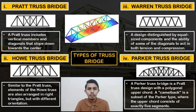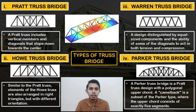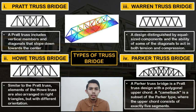There are several types of truss bridge. First, Pratt truss bridge, which has vertical and diagonal members arranged in the middle. Second, Howe truss bridge, similar to Pratt truss, where the elements are also arranged in rectangles but with a different orientation. Third, Warren truss bridge, characterized by equal-sized components and the ability of some members to act in both tension and compression. Lastly, Parker truss bridge, which is a Pratt truss design with a polygonal upper chord.